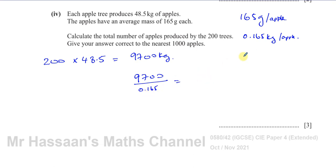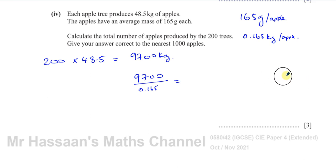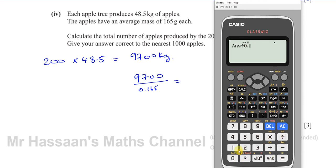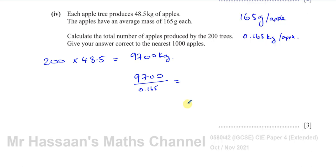You can think of it as: kilograms divided by kilograms per apple gives you kilograms times apples over kilograms, so the kilograms cancel and you're left with the number of apples. So you have 9,700 divided by 0.165, which gives you 58,787.87 — a recurring decimal.